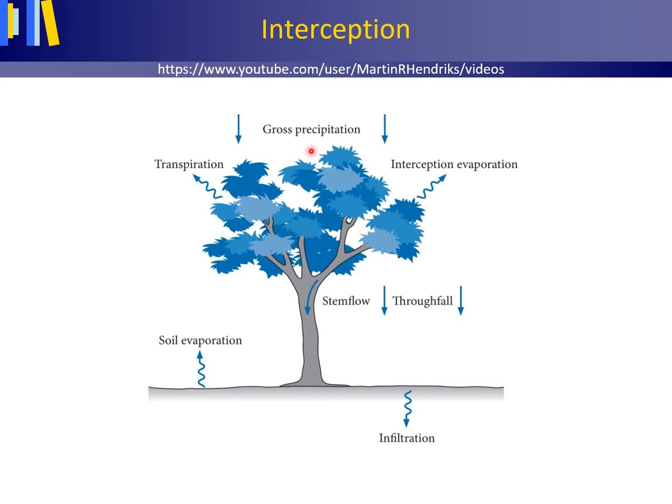The amount of water stored on plant surfaces in a period of time, either as intercepted rain, snow or ice, is referred to as interception storage.